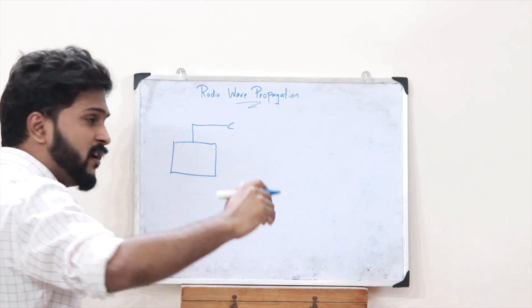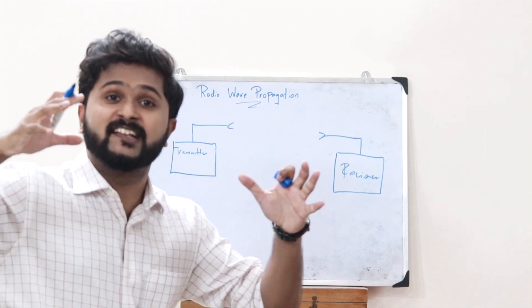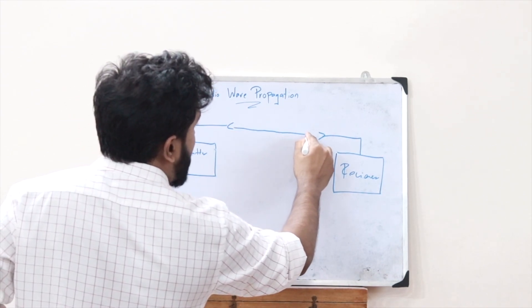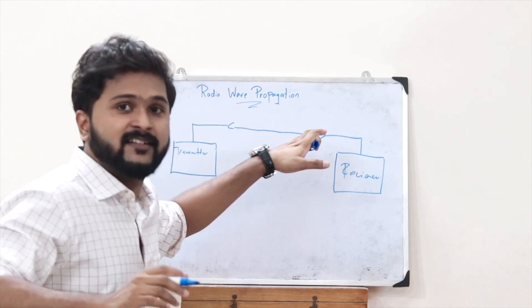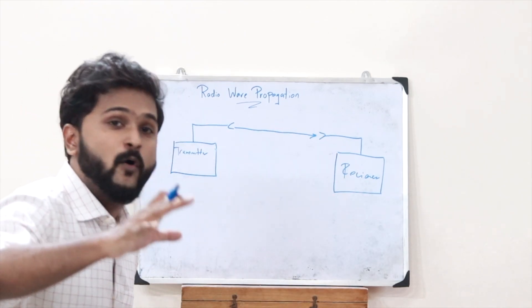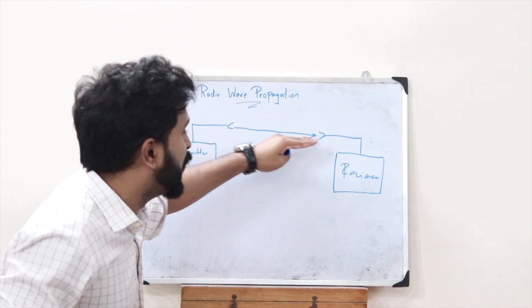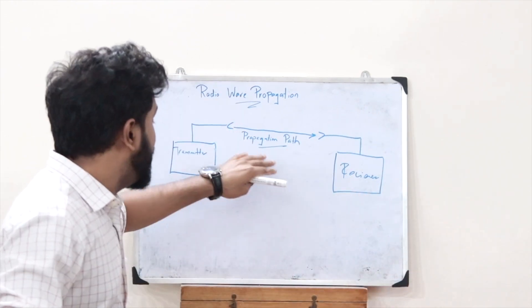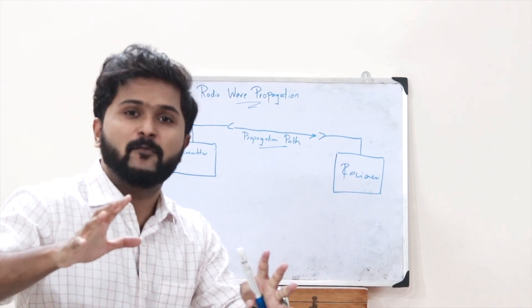Let's draw that. Let this be a transmitter antenna and let this be a receiver antenna. This transmitter antenna will send an electromagnetic radio wave towards the receiver antenna, and once the receiver antenna receives this electromagnetic radio wave, that particular information is received at the receiver side. The path through which this electromagnetic radio wave travels is referred to as the propagation path. Based on this propagation path, there are three modes of propagation.